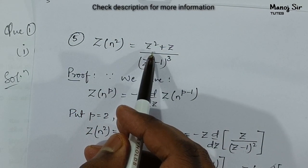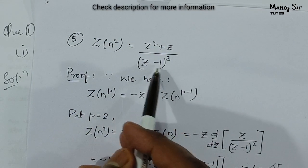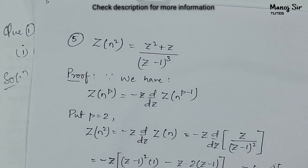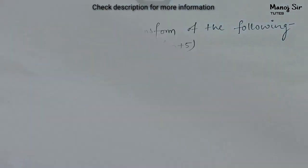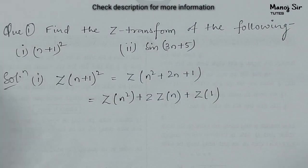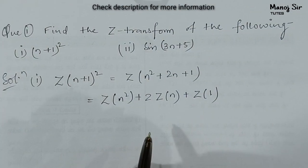We are going to substitute these values. The Z-transform of n squared is (z²+z)/(z−1)³.